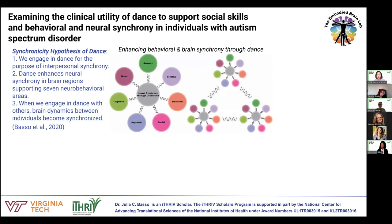I developed what is called the synchronicity hypothesis of dance. My background is as a neuroscientist by training and a dancer by life. I developed this hypothesis based on the idea that evolutionarily speaking, dance is thought to have emerged as a form of interpersonal coordination or synchrony — a form of communication. The synchronicity hypothesis proposes that we engage in dance for the purpose of interpersonal synchrony, and that dancing enhances neural synchrony — these brain oscillations — in seven distinct neurobehavioral regions, specifically sensory and motor areas, cognitive components, rhythmic training to music, social-emotional aspects, and creative aspects. I consider dance an enriched form of physical activity.